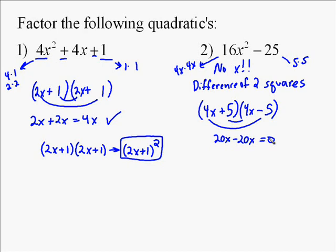And so the factorization of 16x squared minus 25 is 4x plus 5, 4x minus 5. And it's something you just have to memorize. Whenever you have the difference of two squares, you end up with adding the square roots and subtracting the square roots.